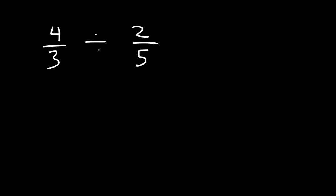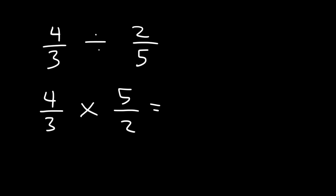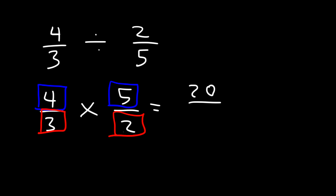Perhaps you've heard of the expression keep-change-flip. What it means is that you keep the first fraction the same, you change division to multiplication, and then you flip the second fraction. So now we can just multiply the two fractions across. 4 times 5 is 20, and 3 times 2 is 6, so we have 20 over 6.